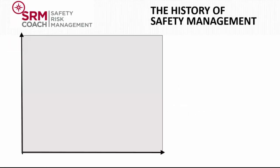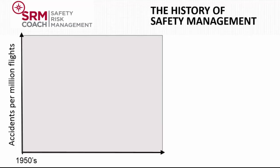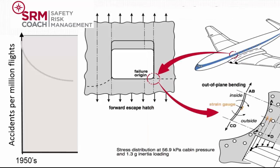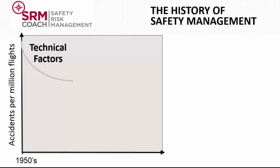When we look at the beginning of the modern jet transport age and think back to the first commercial jet aircraft like the Comet, the ratio of accidents per million flights was quite high. In the 1950s, accidents were mainly caused by technological factors. Remember the square windows on the Comet? So in order to bring the accident rate down, there was a heavy emphasis on accident investigation which determined technical factors that caused the accident.